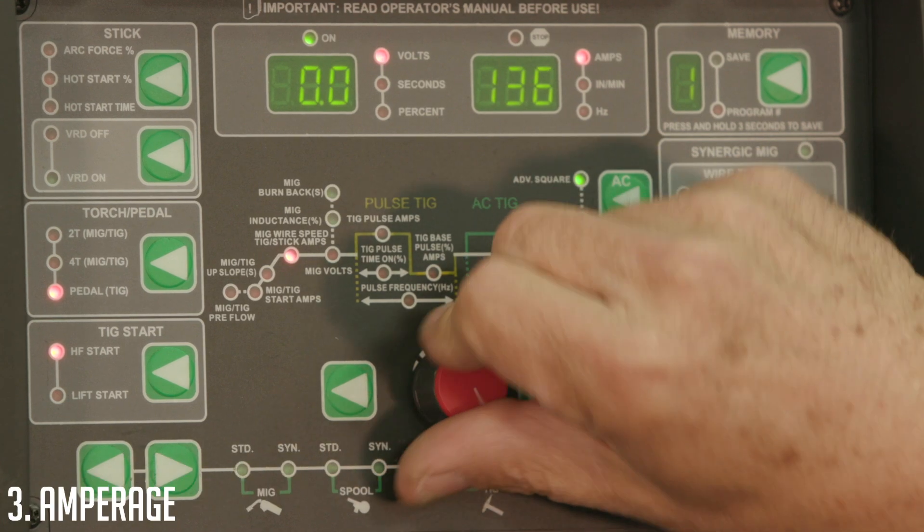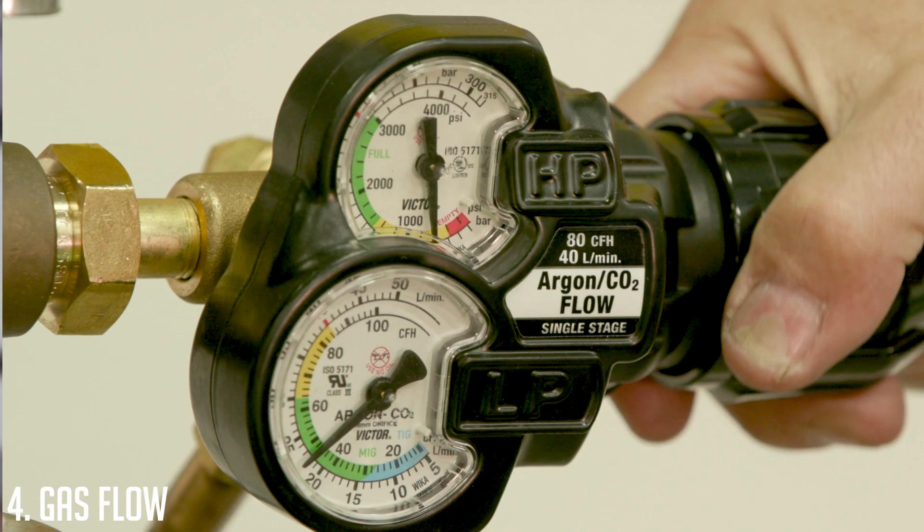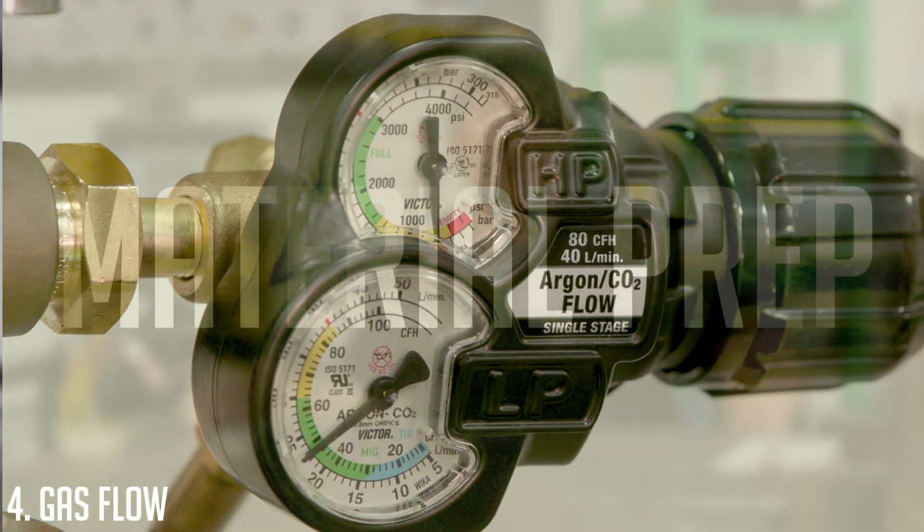The next one is going to be amperage, and the last one is simply set the gas flow. Our machine is set.